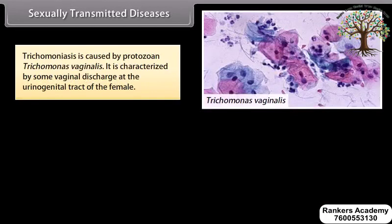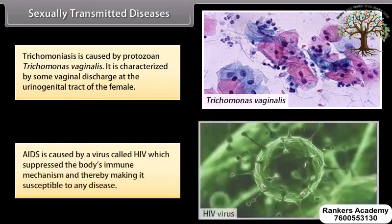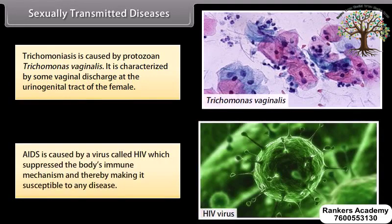Trichomoniasis is caused by the protozoan Trichomonas vaginalis. It is characterized by vaginal discharge at the urinogenital tract of the female. AIDS is caused by a virus called HIV, which suppresses the body's immune mechanism, thereby making it susceptible to any disease.